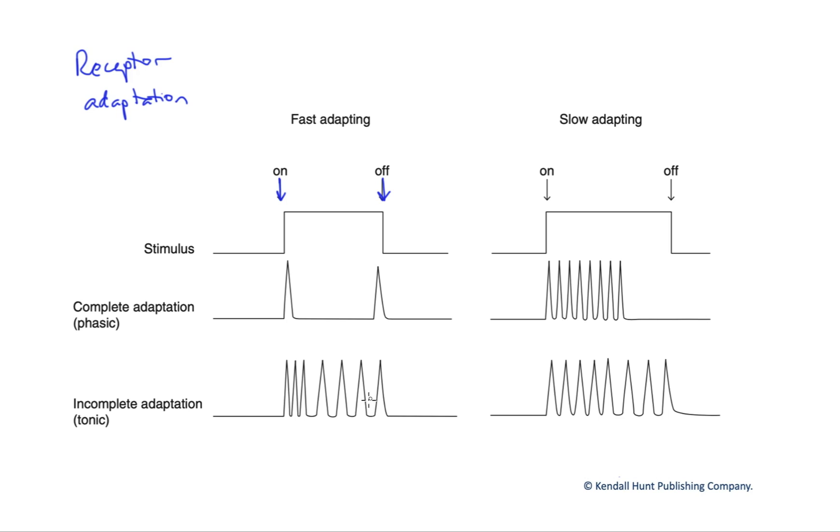Now, often this occurs through what's called membrane adaptation. In other words, the receptor itself becomes less sensitive to the stimulus over time. In other words, the receptor potential will get smaller. This is usually due to increased potassium efflux and the receptor itself becoming slightly hyperpolarized.